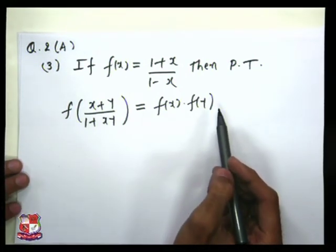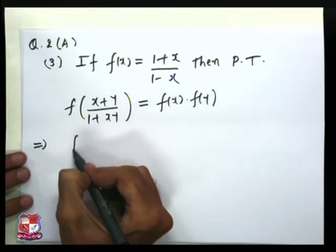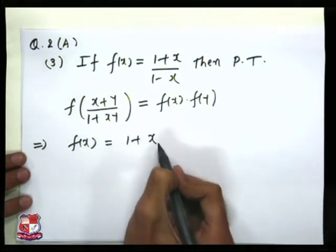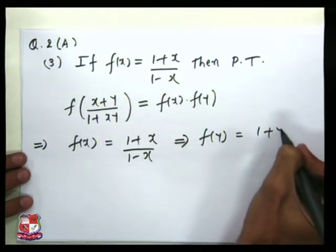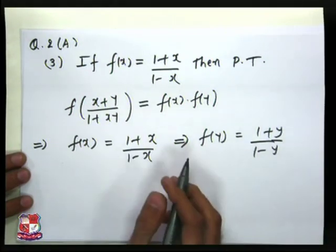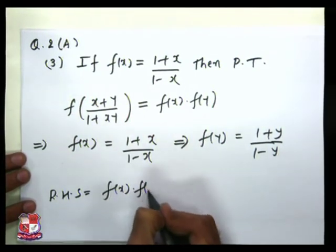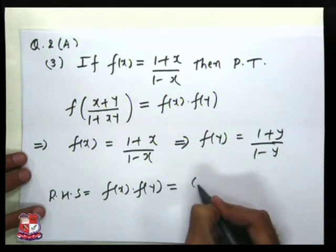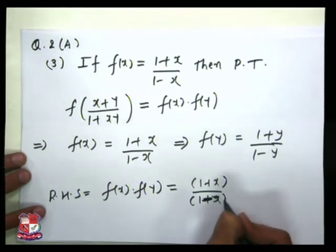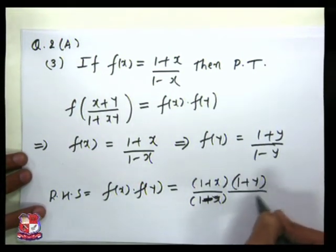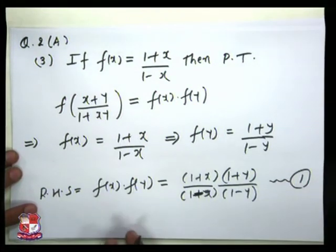First, we find f(y). Since f(x) = (1+x)/(1-x), then f(y) = (1+y)/(1-y). So f(x) · f(y) = (1+x)/(1-x) · (1+y)/(1-y). This is our right hand side, and we call this equation number 1.